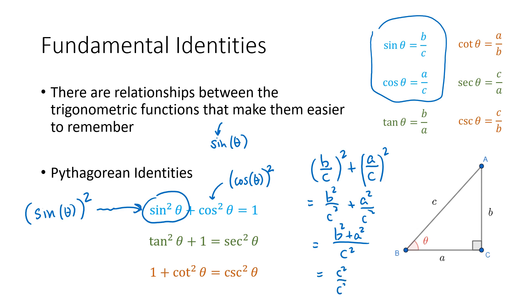So that's just c squared over c squared, which works out to be one. That's why the first identity works. And if you play around with the second and third identities, just plugging in the fractions based on the definition of the trig functions, you'll see that those work out as well. They all just follow from the Pythagorean theorem.